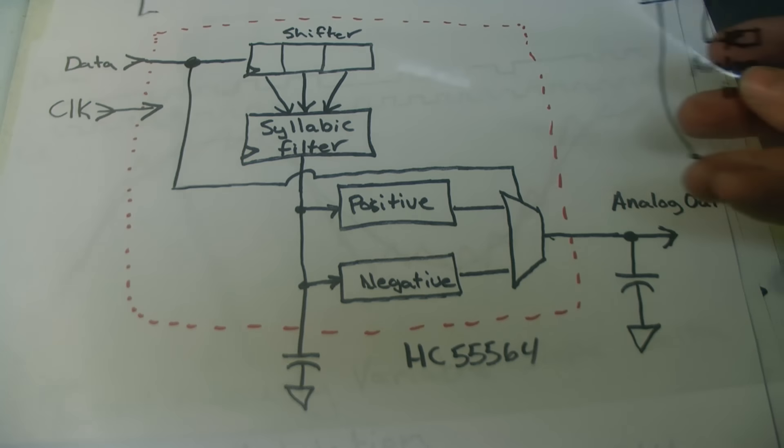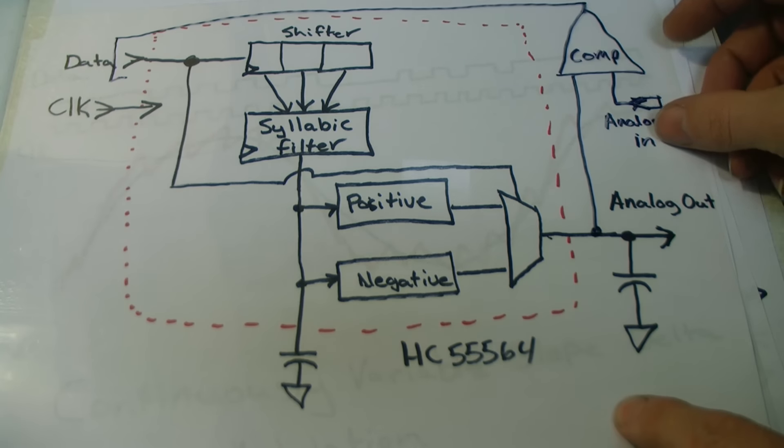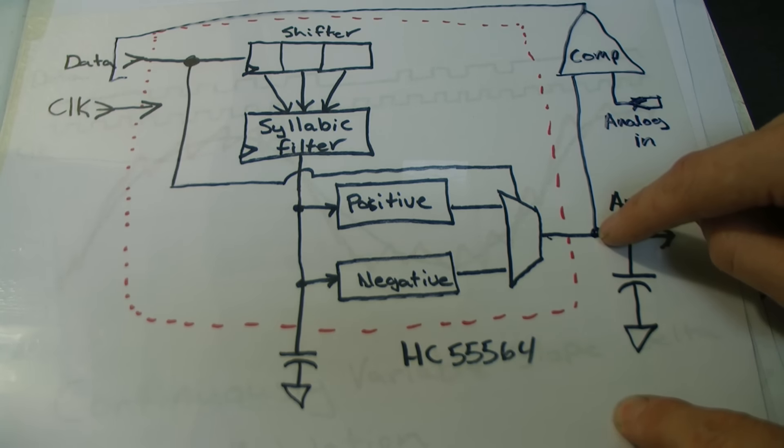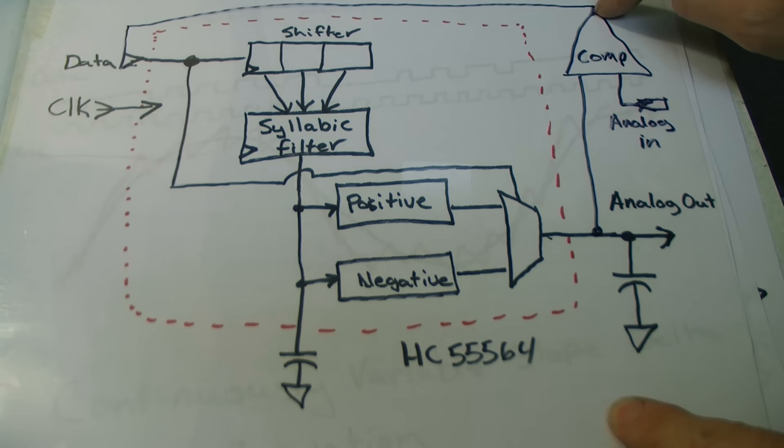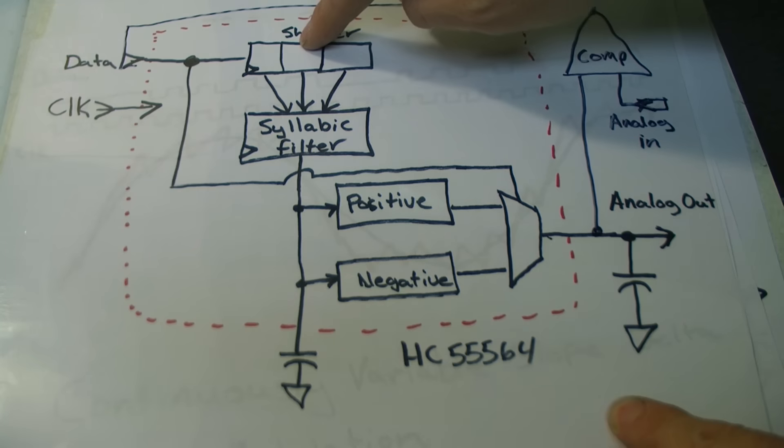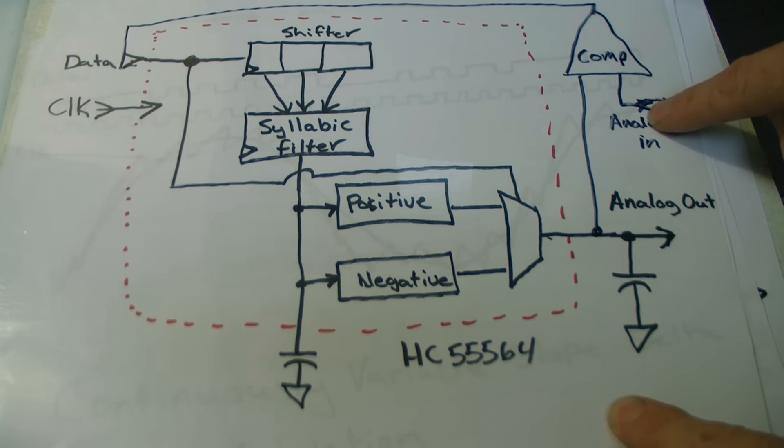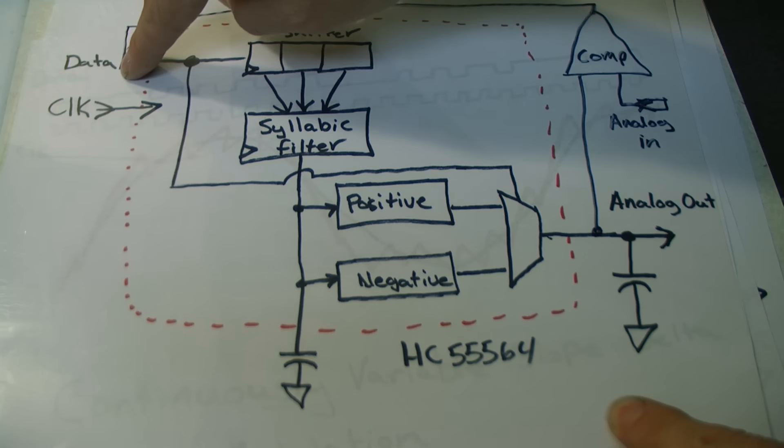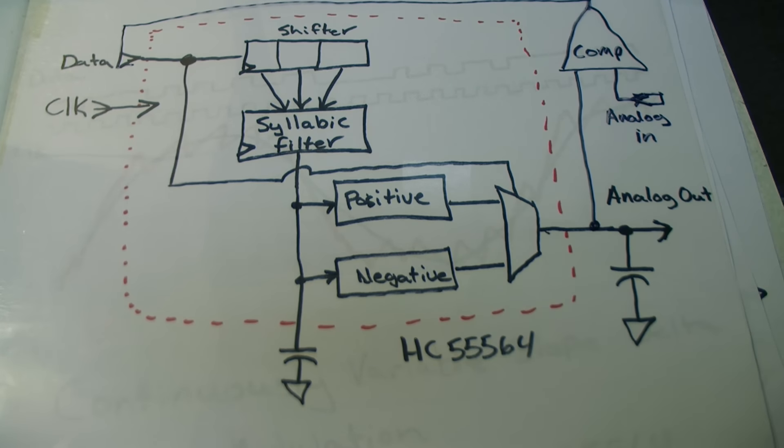To make an encoder from the decoder, we just need to add an analog comparator that compares the analog output from the decoder to our analog reference. The output of the comparator will be a digital signal that will feed back into the decoder which will try to track the analog input, and then all we do is we transmit the data at this node along with the clock. And it's as simple as that to make the encoder side of this.